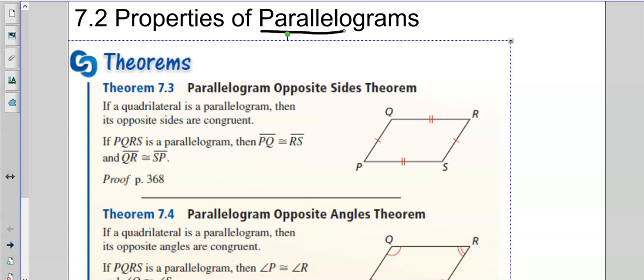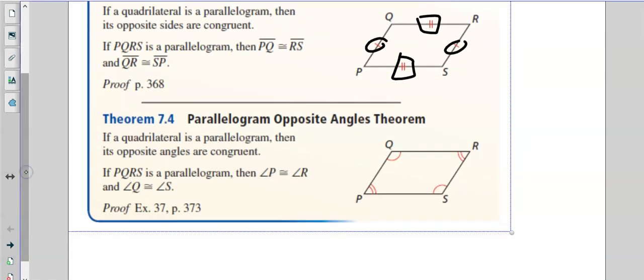So first one is opposite sides theorem. If we have parallel lines, opposite sides are equal. And then also, opposite angles theorem, opposite angles of a parallelogram are also equal.